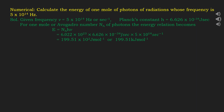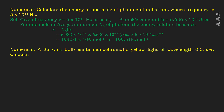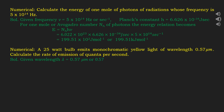Second numerical: a 25-watt bulb emits monochromatic yellow light of wavelength 0.57 micrometers. Calculate the rate of emission of quanta per second. The wavelength λ = 0.57 μm = 0.57 × 10⁻⁶ m, velocity of light c = 3 × 10⁸ m/s, and Planck's constant h = 6.626 × 10⁻³⁴ joule second.